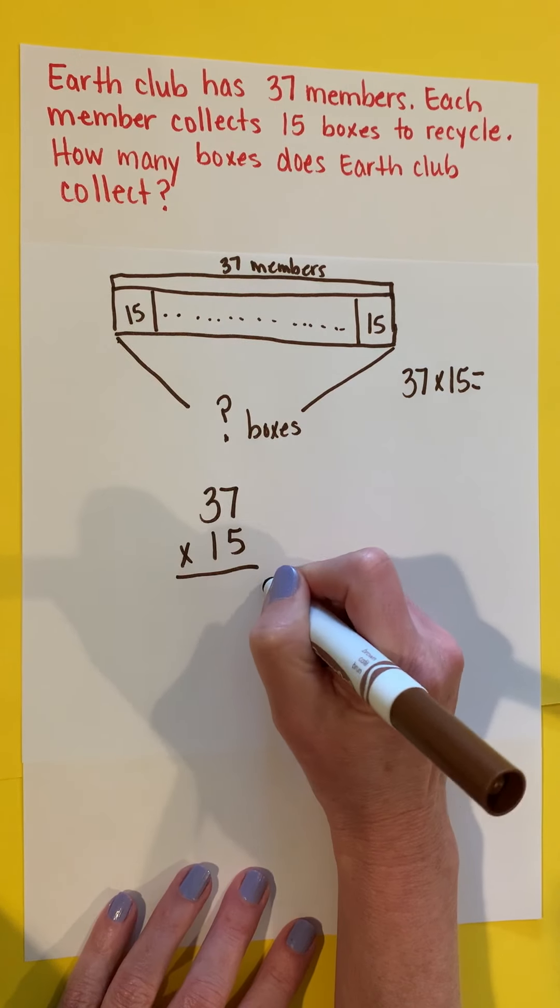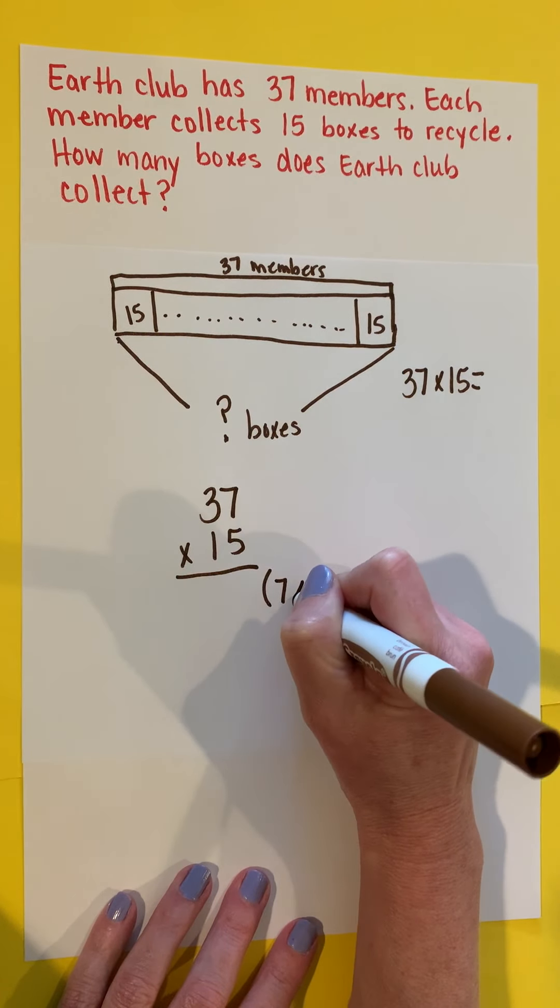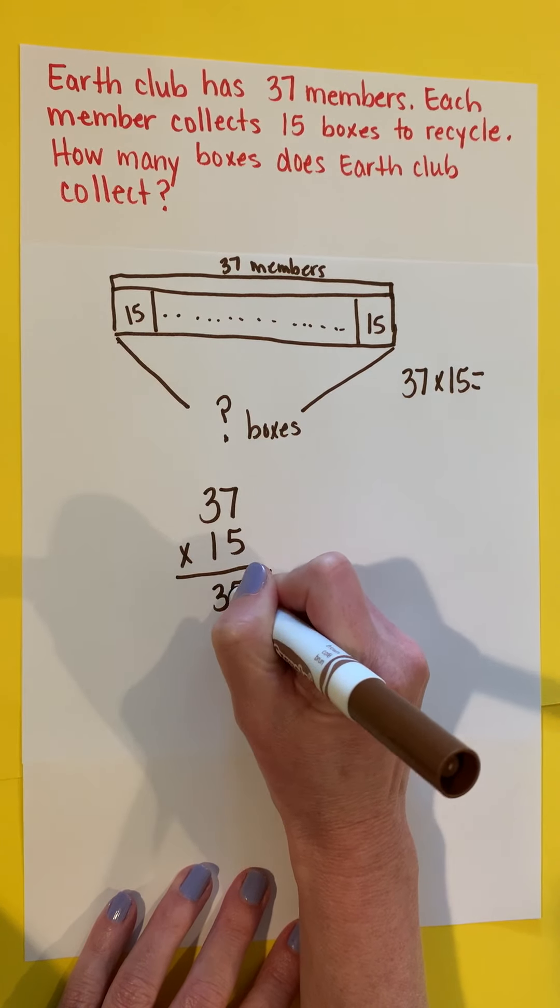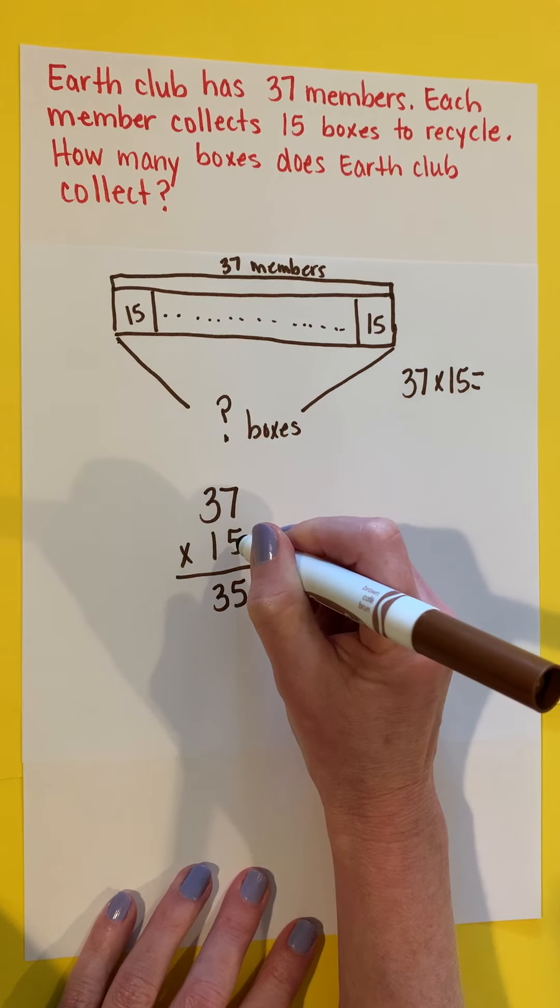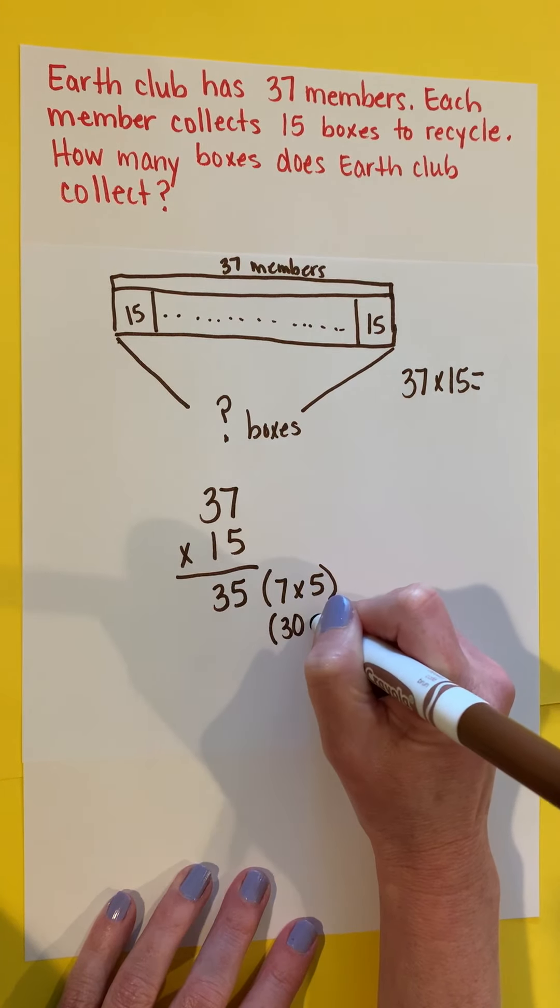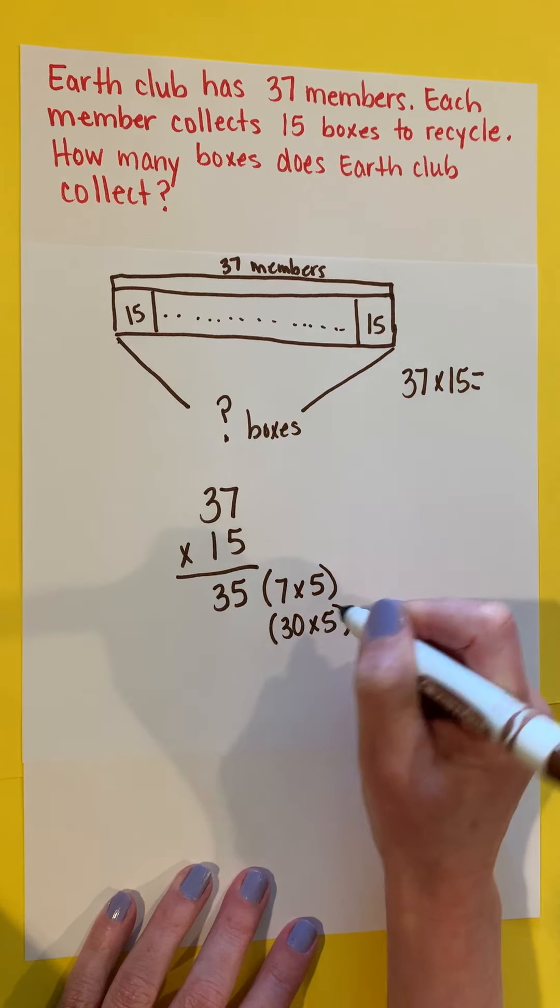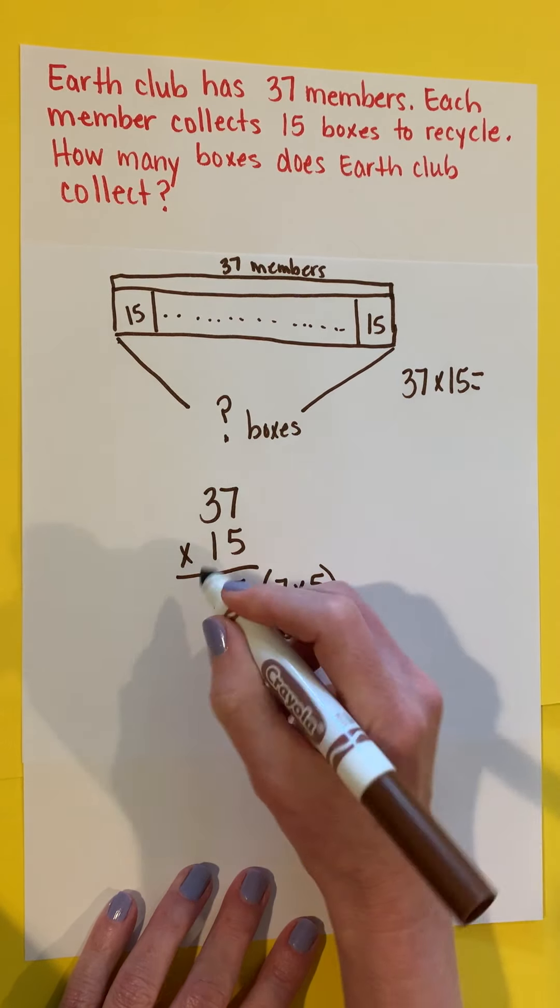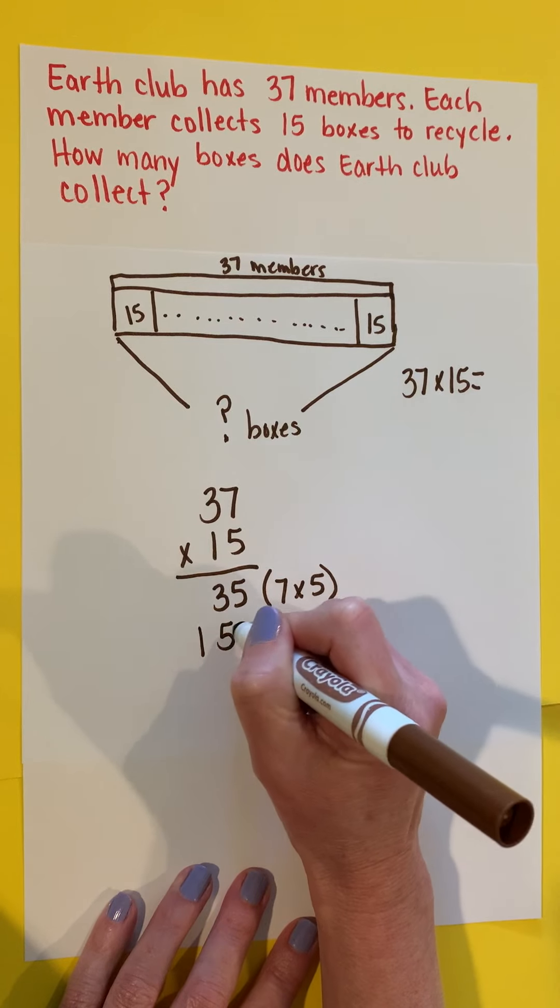I'm going to multiply seven ones times five ones, and that's going to give me 35 ones. Now I'm going to take 30 and multiply it five times. And I know that three tens multiplied five times is 15 tens, which gives me a value of 150.